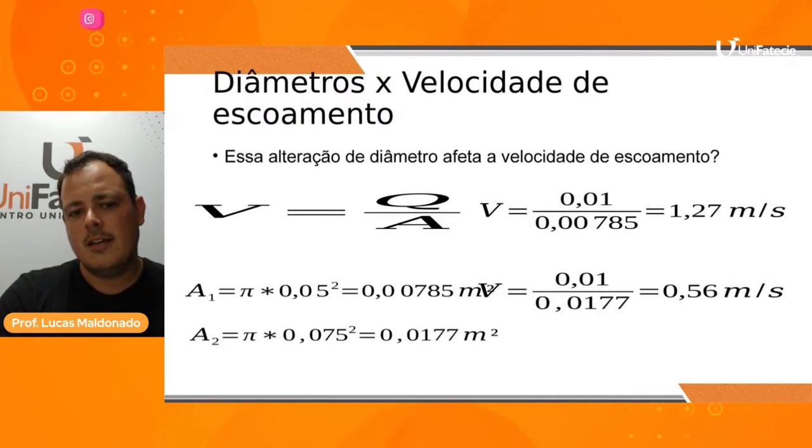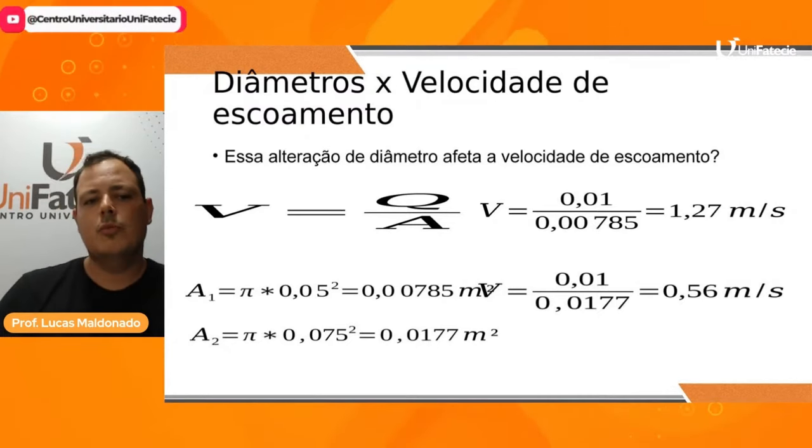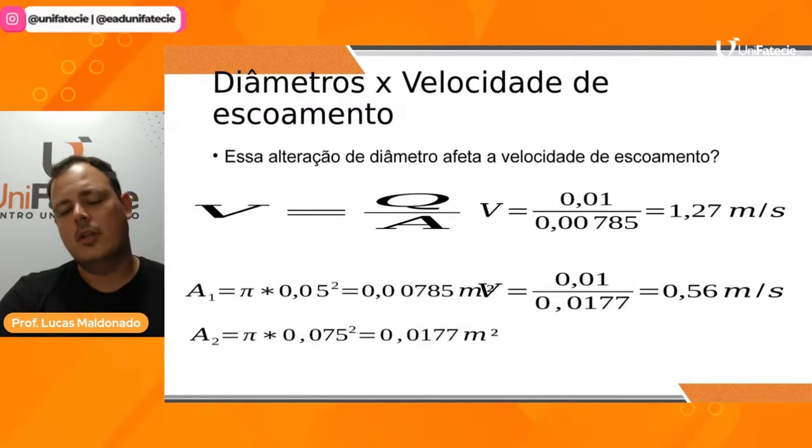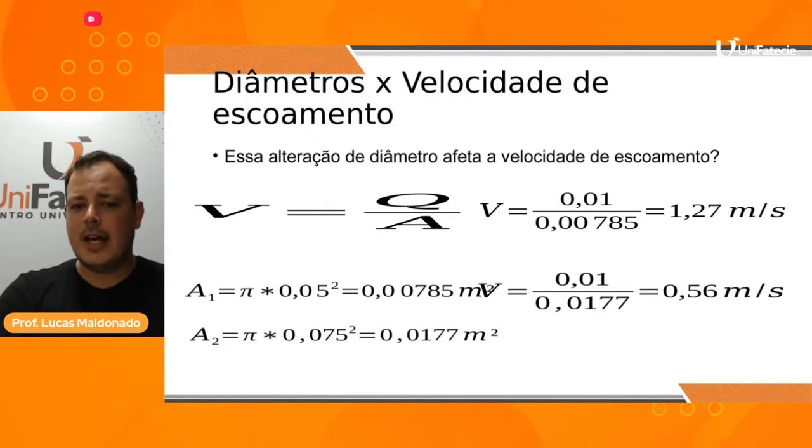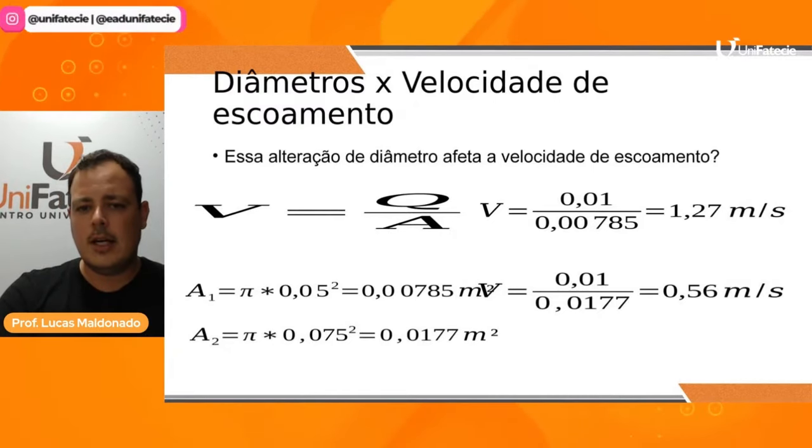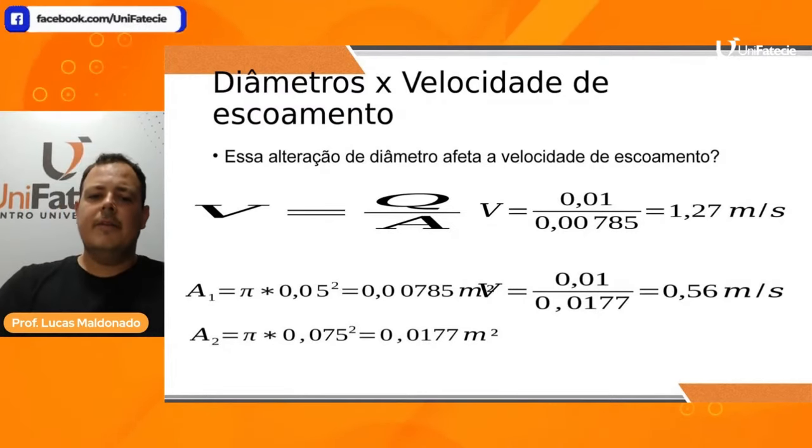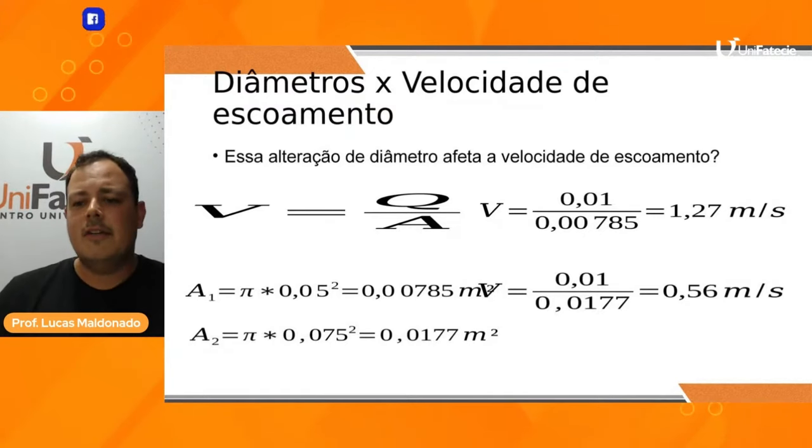Coloquei 0,01 dividido pela área que eu calculei para o tubo de 100 milímetros e para o tubo de 150 milímetros. Notamos uma redução. Quando eu tenho um tubo maior, um diâmetro maior, eu vou ter uma área maior. Se eu divido por mais, acaba sendo menor a minha velocidade. É uma relação: quanto maior o tubo, menor a velocidade. É inversamente proporcional.